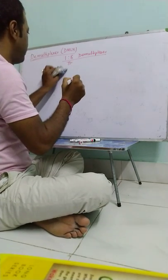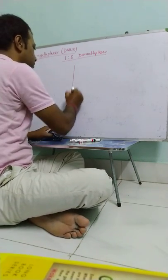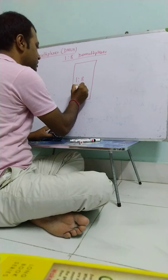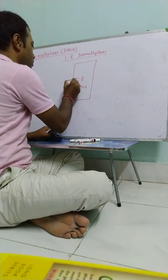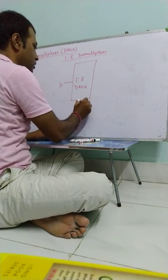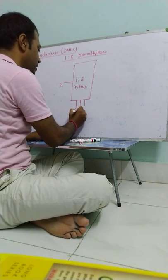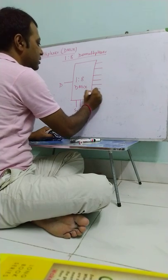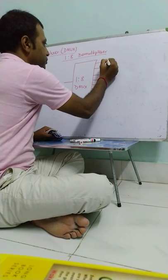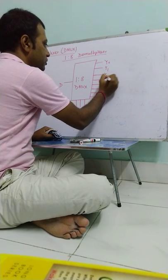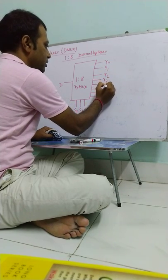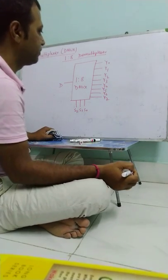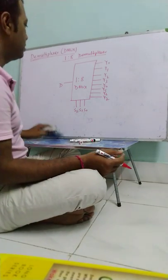So basic block diagram. 1 to 8 demux. 1 input. 2 to the power 3, so 3 select lines. And 8 outputs. Output Y0, Y1, Y2, Y3, Y4, Y5, Y6, Y7. Now the truth table.